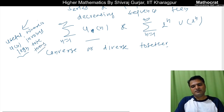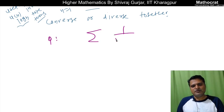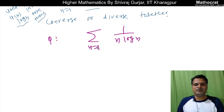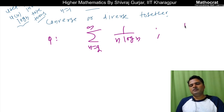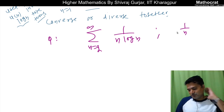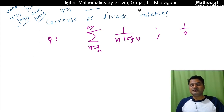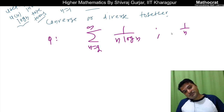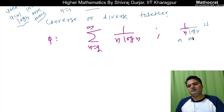This is useful when u_n involves logarithm terms. For example, 1 upon n log n, n from 1 to infinity. This is a positive term sequence. 1 upon n is monotonically decreasing. log n is an increasing function, so 1 by log n will be decreasing — monotonically decreasing. So 1 divided by n log n is a monotonically decreasing sequence of positive terms.